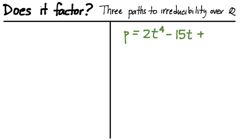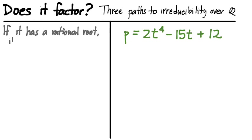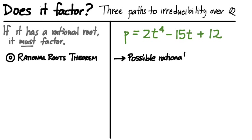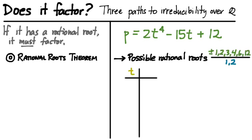We're going to start with a toy example: p is 2t to the fourth minus 15t plus 12. It's not too hard to convince yourself that if this polynomial does have a rational root, then we must be able to factor out something of degree 1 — t minus that rational root. The rational roots theorem can tell us whether or not a polynomial has a rational root.